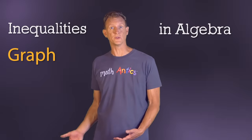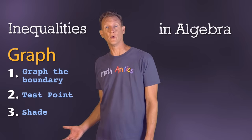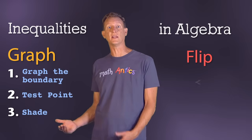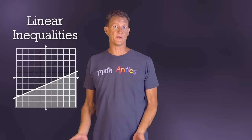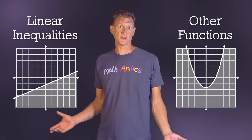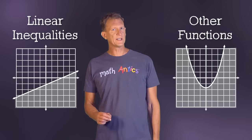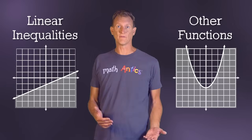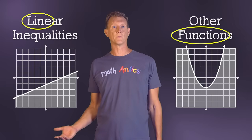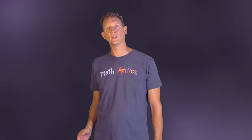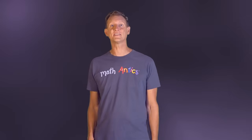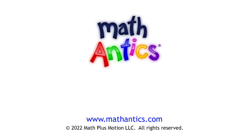Alright, so now you know the basics of inequalities in algebra. You know how to graph an inequality using the three-step process we learned in the first part of the video, and you also know that there are a couple situations where you need to flip the inequality sign when solving or simplifying inequalities. You may have noticed that we only worked with linear inequalities in this video, but the concepts we learned can all be extended to other algebraic functions that you may learn about in the future. All you really need to do is change step 1 of the graphing procedure from graph the boundary line to graph the boundary function. We covered a lot in this video, so it may help to re-watch it if you're still a little confused. And the best way to make sure you really understand inequalities in algebra is to try some practice problems on your own. As always, thanks for watching Math Antics, and I'll see you next time!